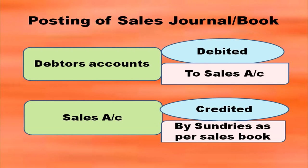You have to post these details from the sales book. The two main accounts to post to are the debtor's account and the sales account. The debtor's account is debited with 'To Sales Account' and the sales account is credited with 'By Sundries as per Sales Book'. In the debtor's account, on the debit side in the particulars column, you write 'To Sales Account'.